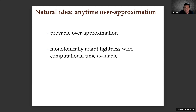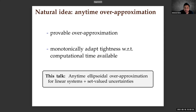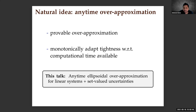If there is less computational time available, the algorithm should automatically adapt and be more conservative, while all the while preserving the over-approximation guarantee. In this talk, I restrict the scope to model-based linear systems with set-valued uncertainties, focusing on the parametric class — specifically anytime ellipsoidal over-approximation.